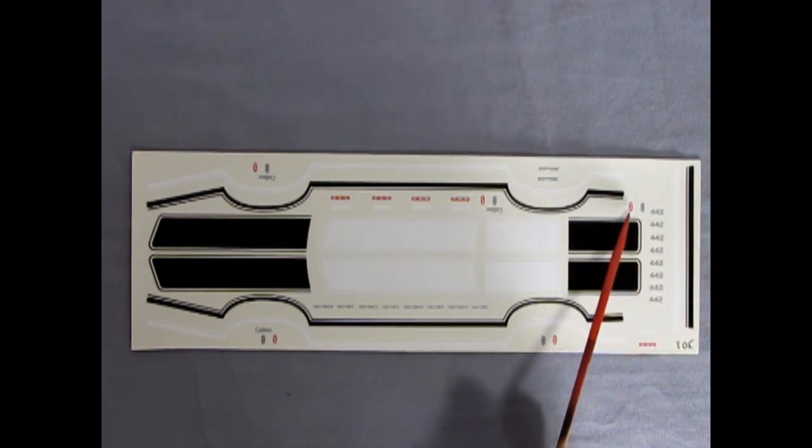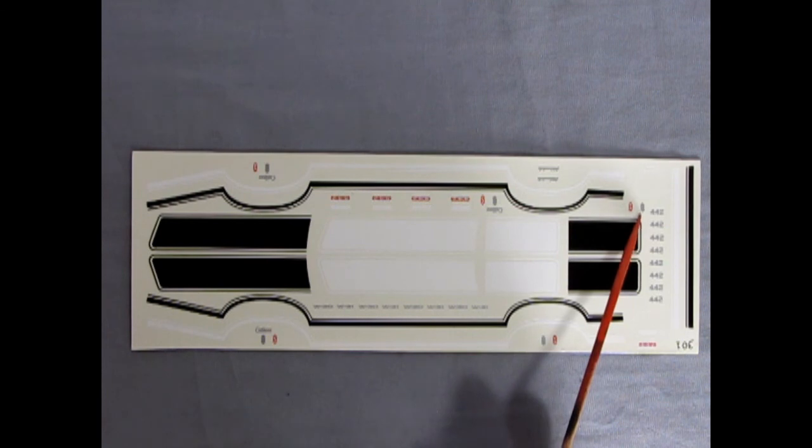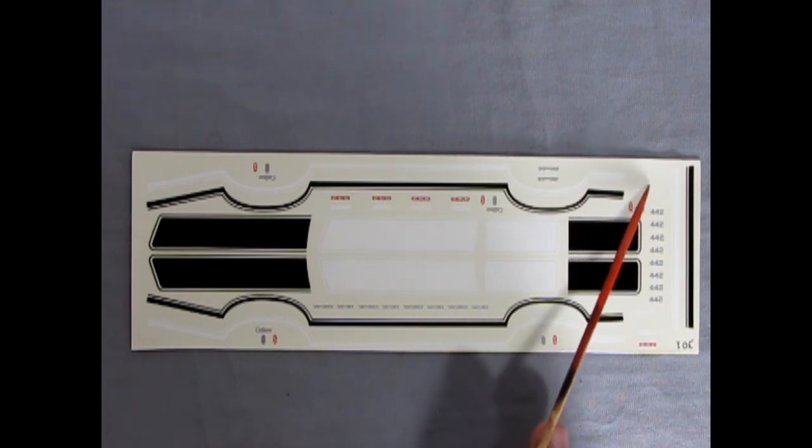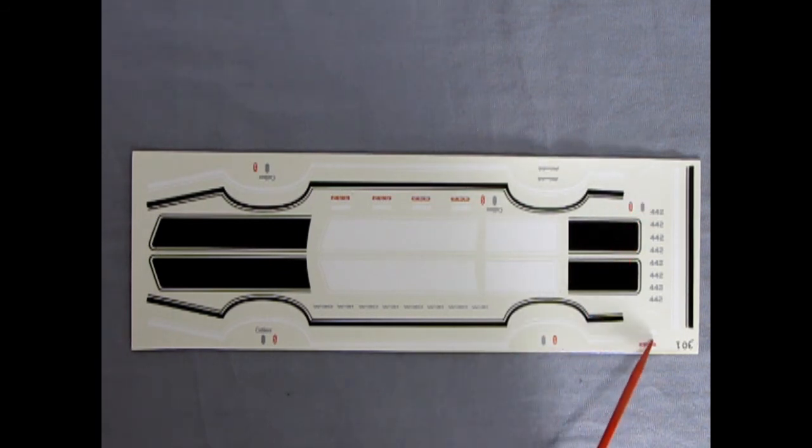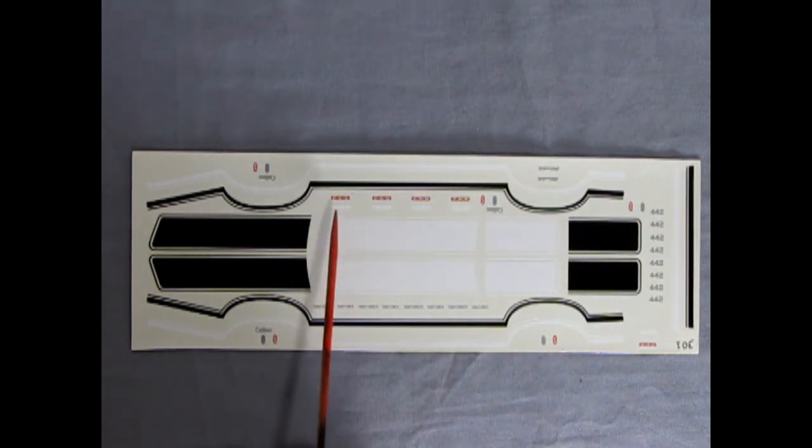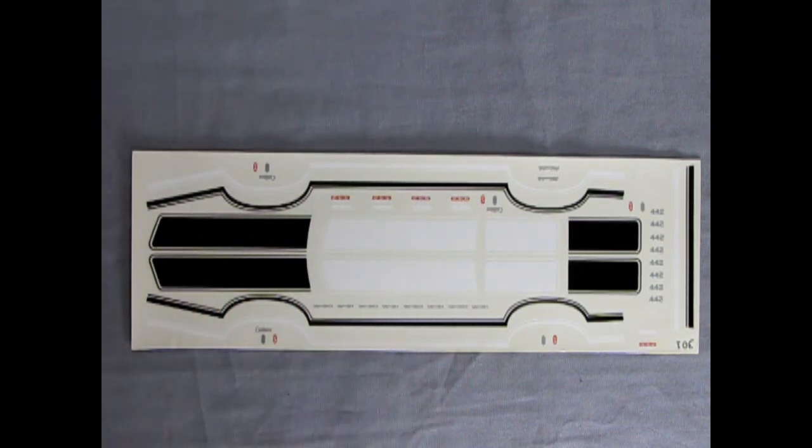He's got these Cutlass S decals, which you put the silver one down first and then slide that one on the top. There's an Oldsmobile air cleaner with Oldsmobile spelled up. Then the one for the 442 with 442 block. And then 442 emblems. So again, very nice work by Fred Cady.